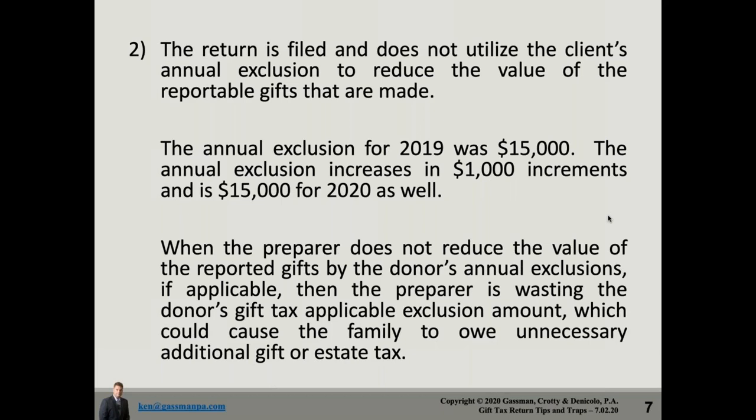The annual exclusion is per person, per beneficiary. A husband and wife can each gift $15,000, or $30,000 total to each beneficiary. In 2020 it's still $15,000; it will eventually bump up to $16,000. If I have 10 grandchildren, I could save $150,000 of gift tax exemption, or $300,000 if married — which at a 40% rate represents $120,000 of potential estate tax liability saved. Making sure the return is prepared correctly is extremely important.